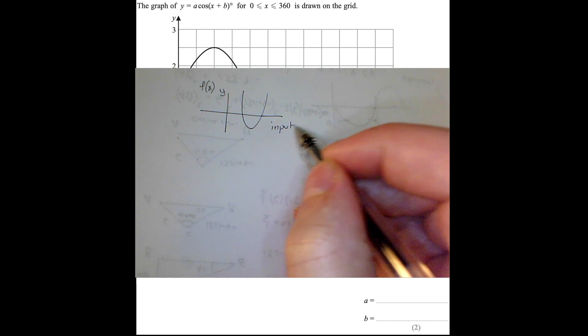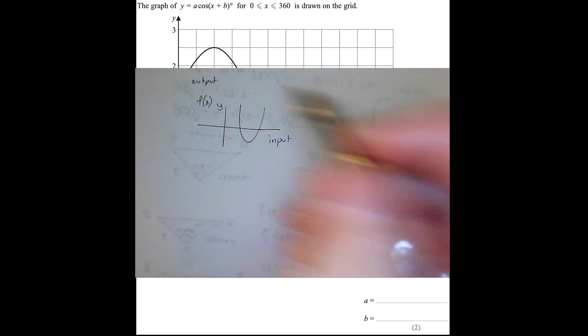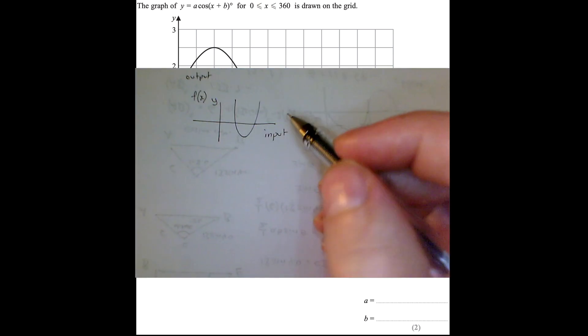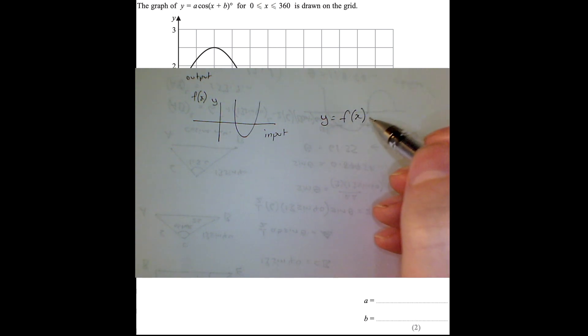So let's just think about any old function. Here's one, f of x, some kind of curve. And you've got the input on the x-axis and the y is the output. Sometimes the y is called the y-axis, sometimes it's called the f of x-axis. Y is the same thing as the output, f of x.